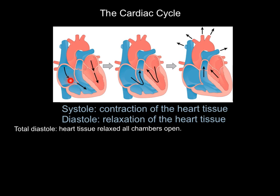Diastole gives the atria a chance to fill with blood. Blood is coming into the right atria and into the left atria. So if the heart is open, blood is being received by these top two chambers — the atria.